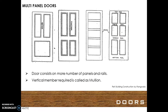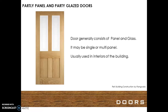Multipanel doors consist of a greater number of panels and rails. Vertical members required are called mullions. Partly panel and partly glazed doors generally consist of panel and glass. They may be single or multi panel and are usually used in interiors of the building.